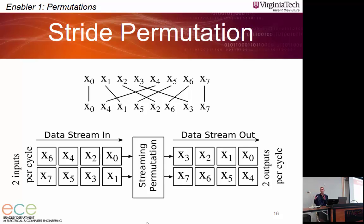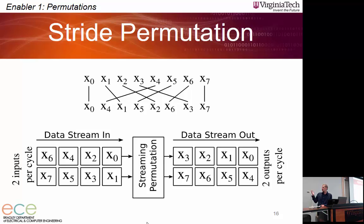Going back to the stride permutation as a relatable example: you have eight elements x0 through x7 applying stride-4 permutation, where x0 pairs with x4, x1 with x5, x2 with x6, and so on — the stride of 4 is the difference between the paired indices. My tool takes as input the desired permutation (x0 through x7 mapped to x0, x4, x1, x5, etc.) and a requested stream width of 2. The output architecture has data entering as x0, x1 in the first clock cycle, x2, x3 in the second, and exiting as x0, x4; x1, x5.